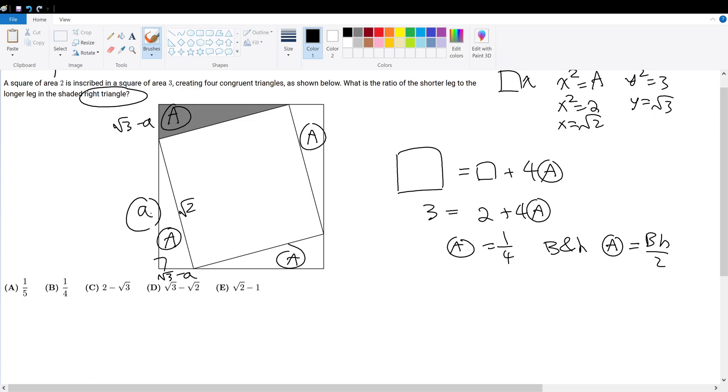But look at this. A, root 3 minus A, and root 2. That's a right triangle, so we can use the Pythagorean theorem. A squared plus root 3 minus A squared must give root 2 squared, which is 2. And with this expression, we can solve for A.